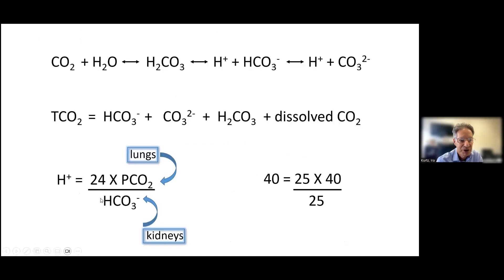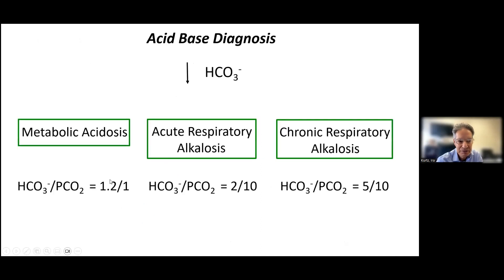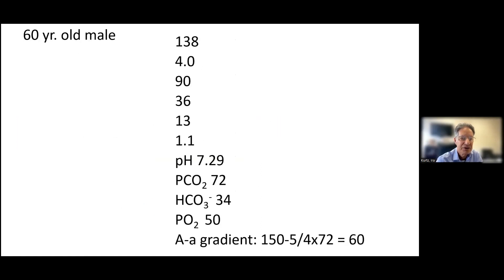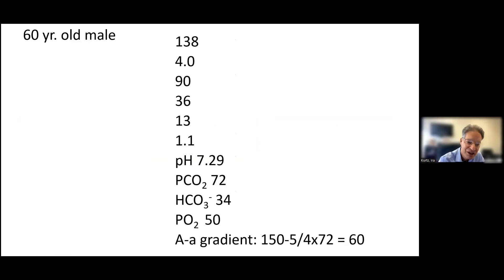If you plug these numbers into the hydrogen ion concentration equation, you'll see they fit. You should do that routinely just to get used to it. So the question is: we have a high bicarbonate — what are the three possible acid-base diagnoses? What three acid-base disorders can raise the bicarbonate or total CO2?